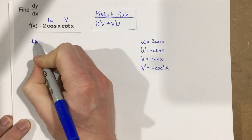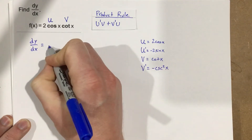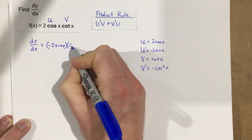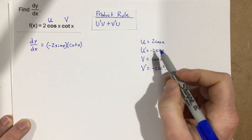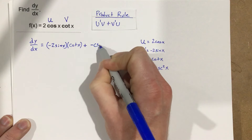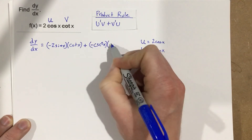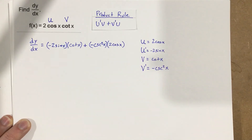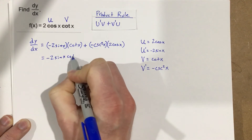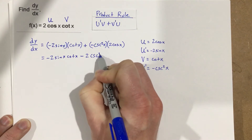Now I can go ahead and use the product rule. So dy/dx equals u prime times v. So u prime is negative 2 sine x, multiplied times v, which is cotangent x. Then plus v prime, which is negative cosecant squared x, multiplied times u, which is 2 cosine x. When I multiply these together, I end up with negative 2 sine x cotangent x minus 2 cosecant squared x cosine x.